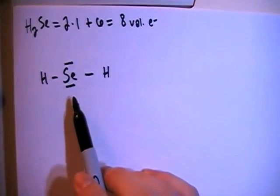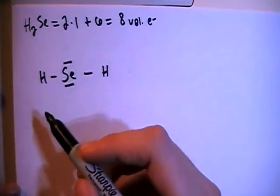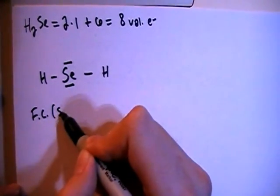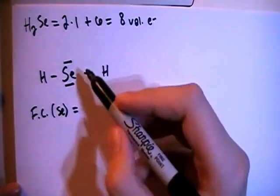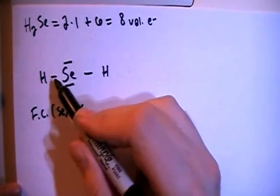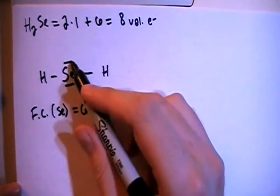And this is going to end up being our final structure, but let's go ahead and check the formal charges to show why. So the formal charge on the selenium in the center is going to be the six valence electrons brought in, minus one, two bonds, minus two,